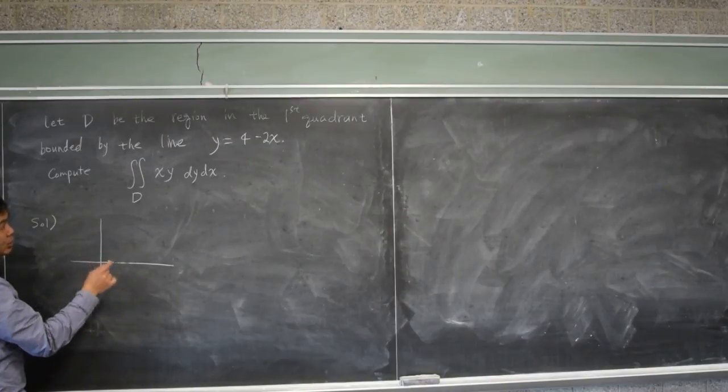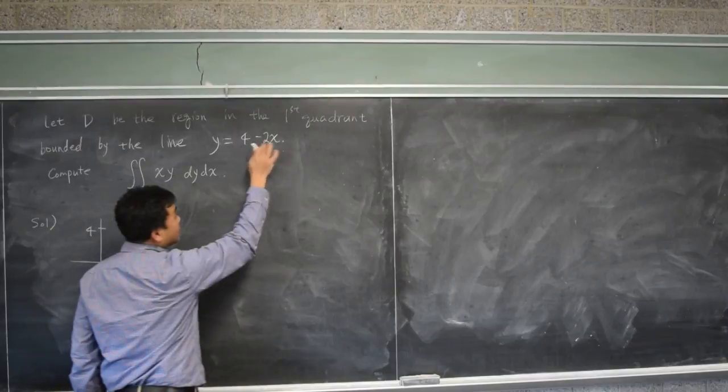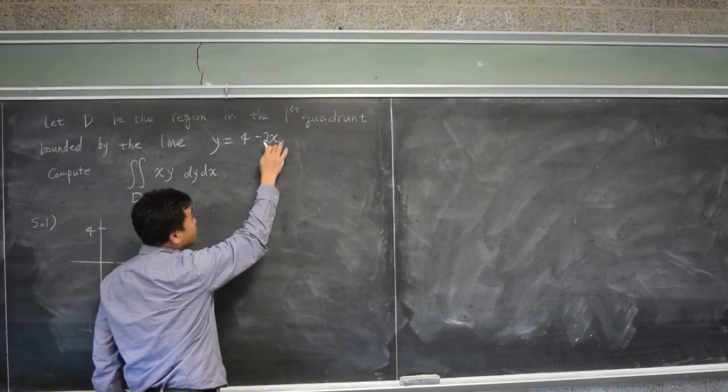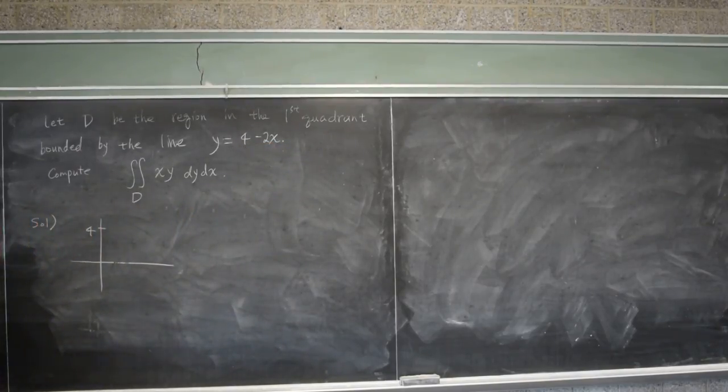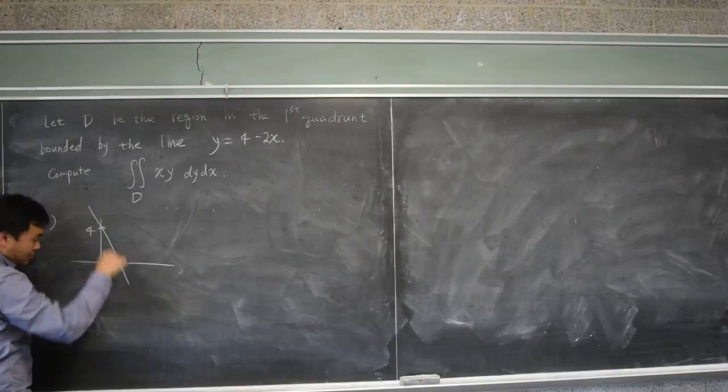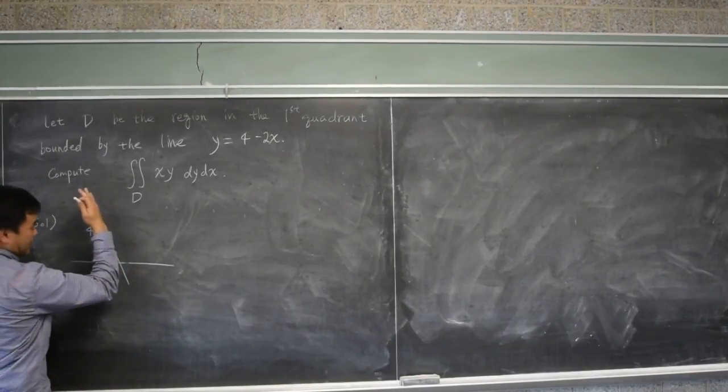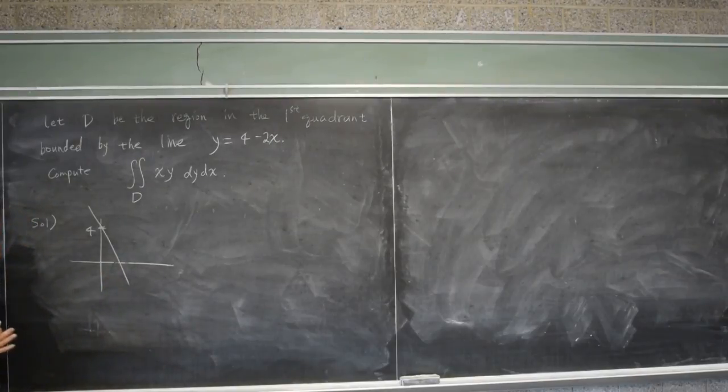So what is the graph y equals 4 minus 2x? Well, the y intercept of this graph is 4. When x is set to be 0, y intercept is 4. And the slope of negative 2 means it's going down like that, slanted in a more steep direction than y equals negative x.